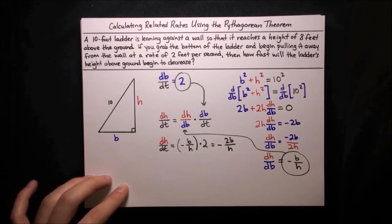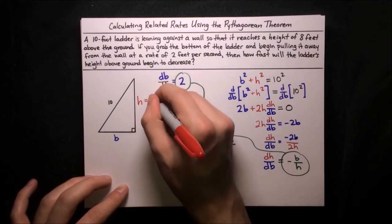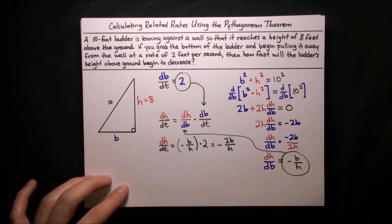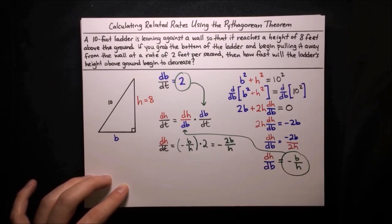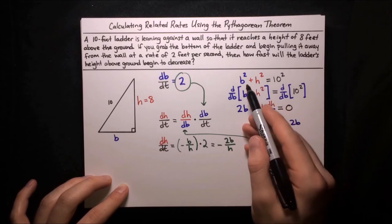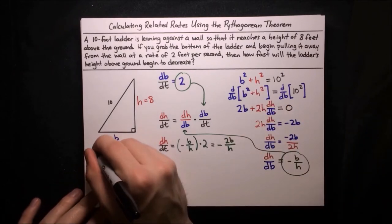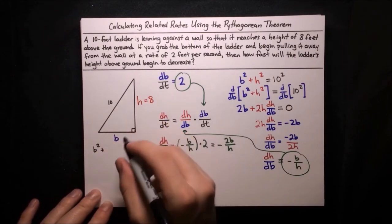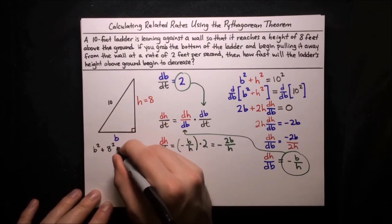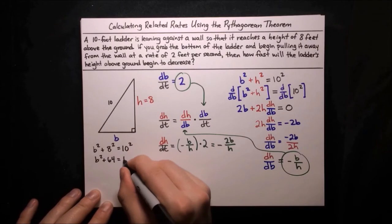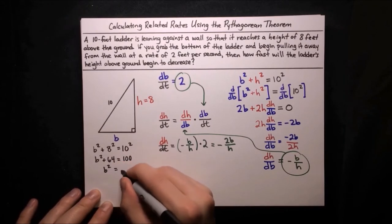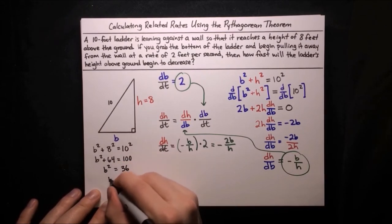We're not done yet. We want to find the particular value of this derivative right at the moment when we start pulling the ladder away. At this moment the height is 8 feet, so we can substitute h = 8. We still need the base b. Using the Pythagorean theorem: b² + 8² = 10², so b² + 64 = 100, which means b² = 36, and b = 6.